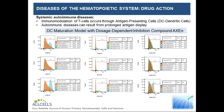Since AllCells routinely produces dendritic cells in-house, we were actually able to use our in-house catalog product as positive controls in the assay. And we're able to do that with many other cell-based assays for other cell types that we regularly offer here as catalog products.